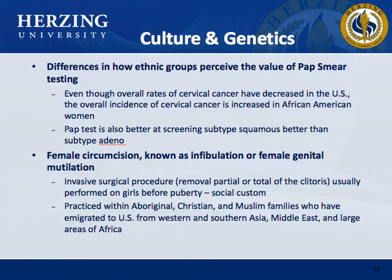Cultural variances include female genital mutilation, involving partial or total removal of the clitoris, which is believed to inhibit sexual pleasure. Vaccines are now approved to prevent the most common human papillomavirus, believed to account for one of the subtypes of cervical cancer.